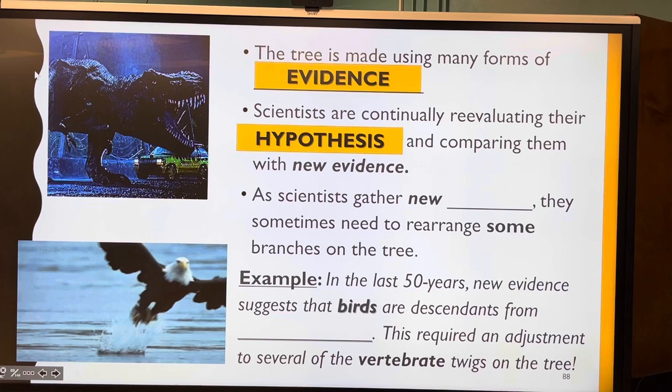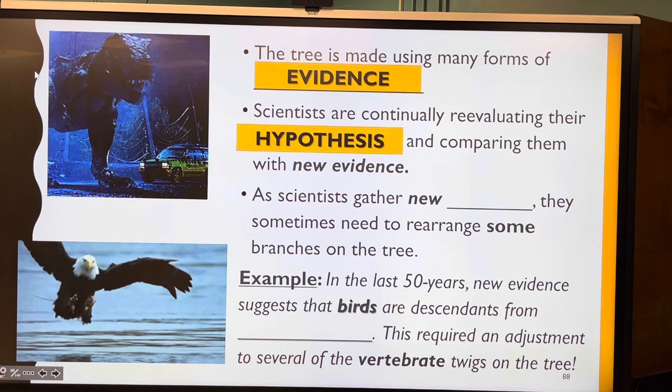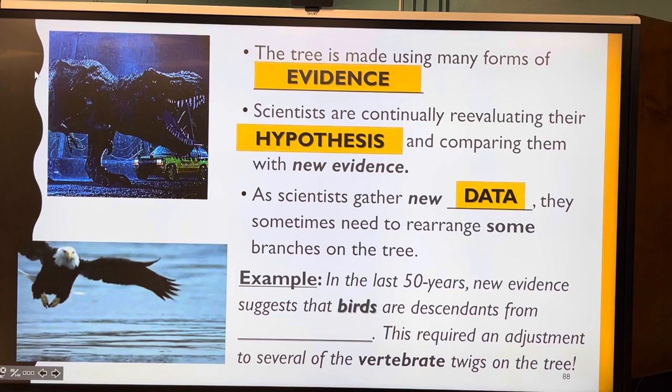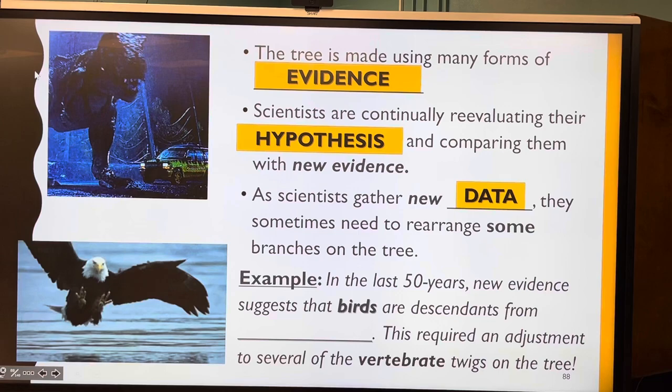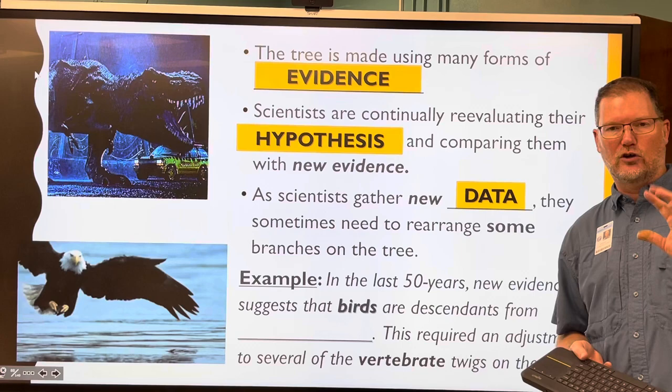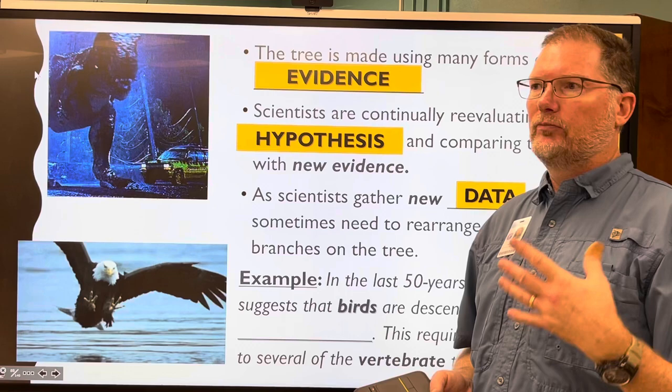Remember: a hypothesis is a possible explanation that has to be tested by many people getting the same results — then you get a theory. As scientists gather new data, evidence, facts — all synonymous — they sometimes need to rearrange some of the branches of the tree, especially when DNA analysis came into play in the late 80s and early 90s. For example, we learned hyenas' phylogeny is not related to dogs and cats as previously thought, and had to rearrange the tree.